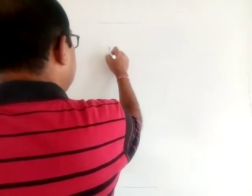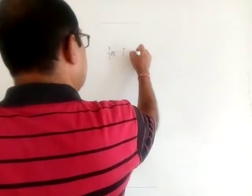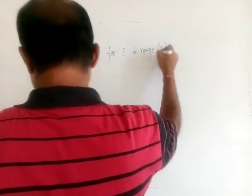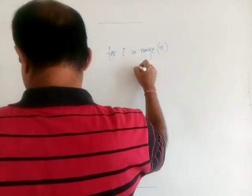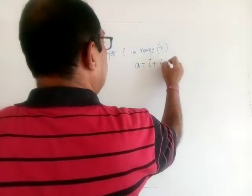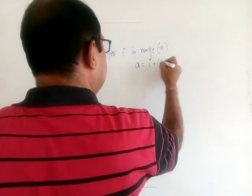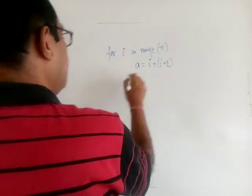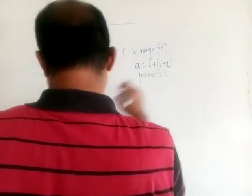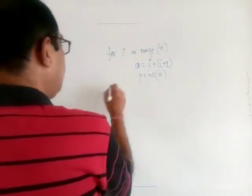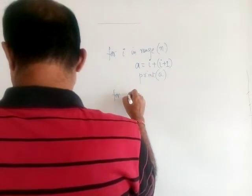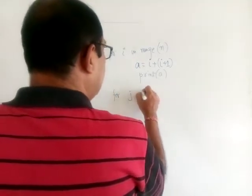Calculate normally the way you calculate the complexity and that will automatically be the worst case complexity. Whatever the code is given like this: for i in range n, and under this given a equals i plus i plus one. It doesn't matter whatever is given. Print a, and then we have given another statement j in range m.